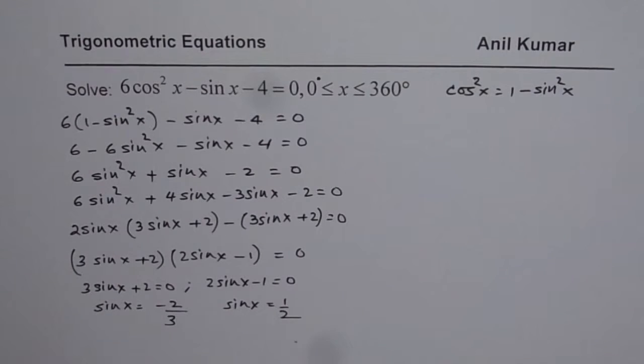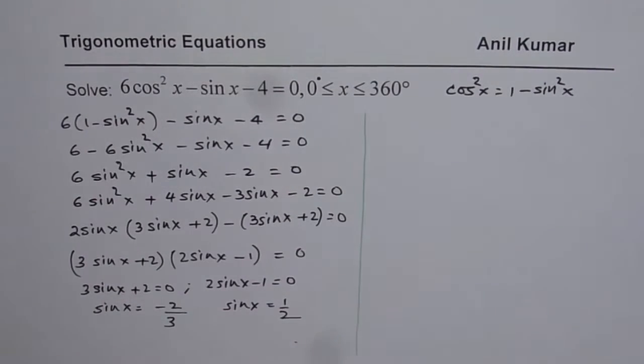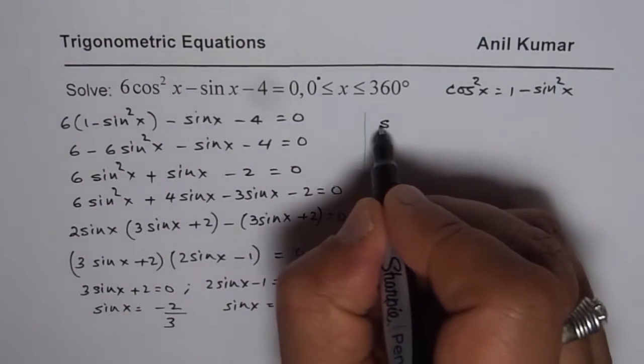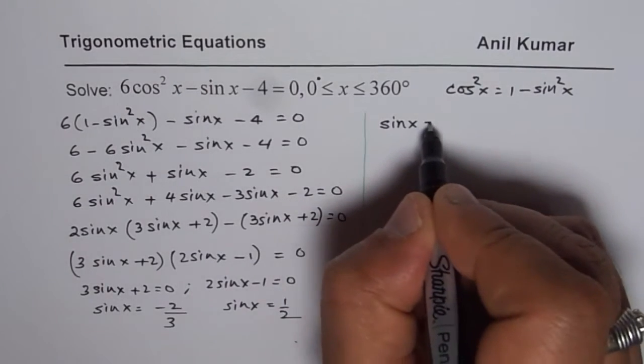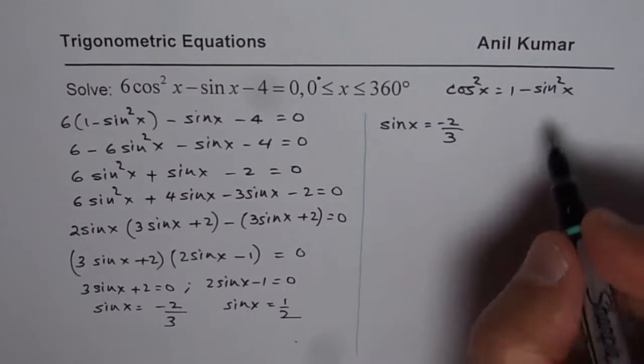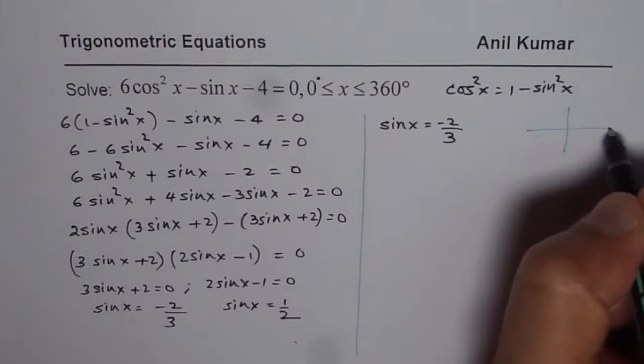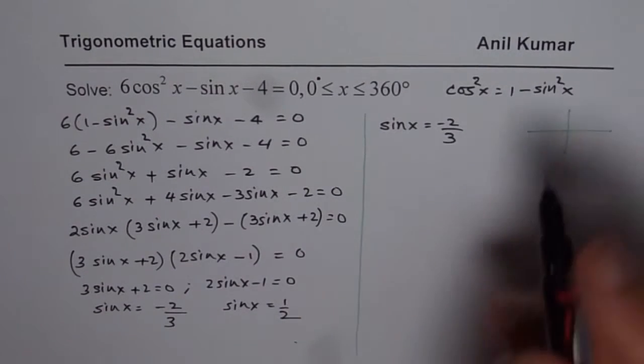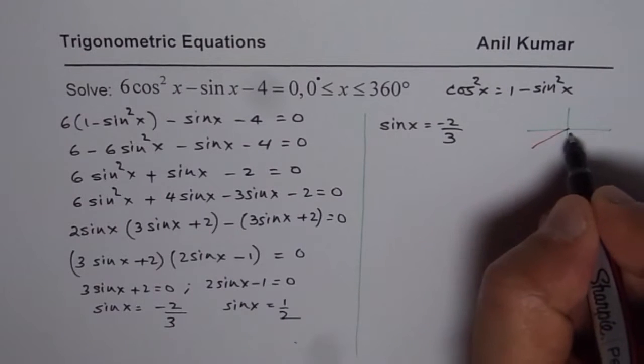These are possible solutions. Now let us figure out what are the values of x. So for the first one which is sin x equals to minus 2 over 3, we know sin is negative in quadrants 3 and 4. So we are looking for solutions in quadrants 3 and 4.